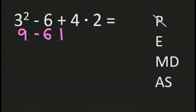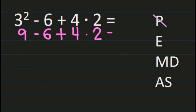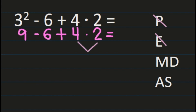3 squared is 9. Then I'm going to bring down the rest of my problem: minus 6 plus 4 times 2. I don't see any other exponents, so I'm finished with exponents. I'm on multiplication and division. The only place I see multiplication is 4 times 2, so that's my next step. 4 times 2 is 8.